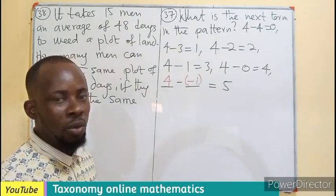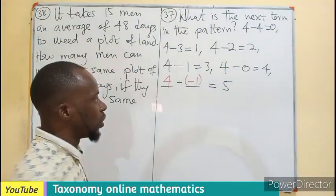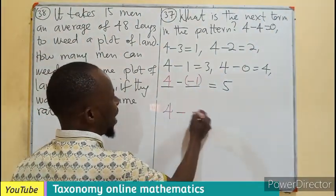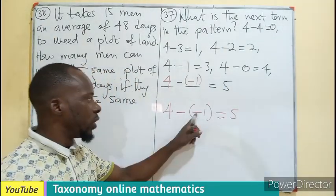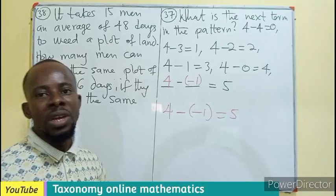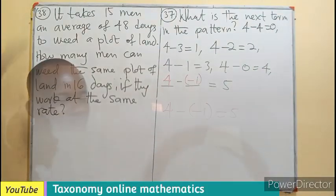The only thing you are looking for is 4 minus negative 1 equals 5. And that is the answer. On the options, your answer is 4 minus negative 1 equals 5, which is true. This will cancel to give you the 5 you are looking for.